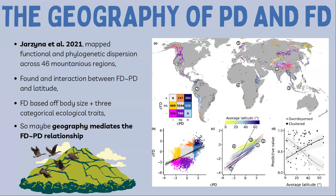What they found was a strong interaction with latitude. The figure shows slopes between functional diversity and phylogenetic diversity across different latitudes — as you go down in latitude, the slope becomes steeper and the intercept also changes. This was a very cool result suggesting latitude mediates this relationship. However, their measurement of functional diversity was just based on body size and three categorical ecological traits — not a lot of information for discriminating many thousands of bird species.